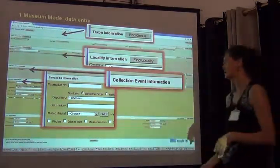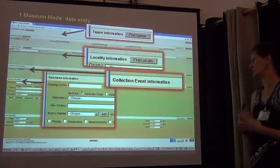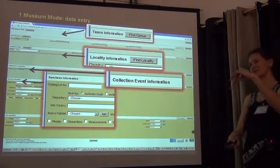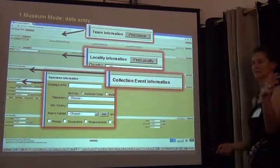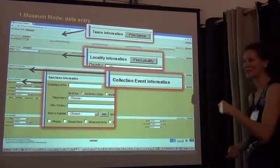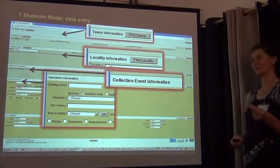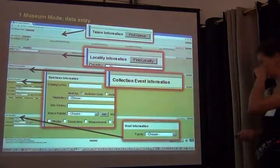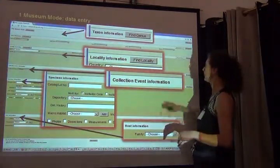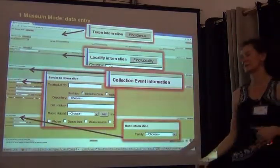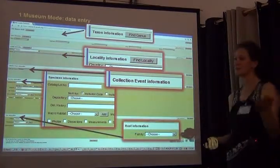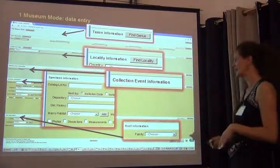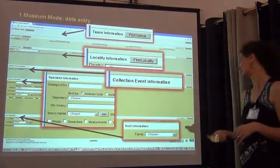Down in the specimen information you can have a whole bunch of different items. One really important thing for us is determination history: if you see on a string of labels that a specimen was first identified as something, then someone else came in and re-identified it and decided it belonged to a different genus and species — all that information can be captured. The host information now works very similarly to the taxon information for the insect specimen — you type in a genus or species name that fills in the hierarchy, which as entomologists figuring out plant higher-level systematics has always been a bit of a problem, but it's now very easy to use.